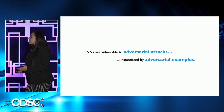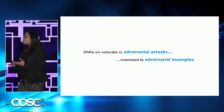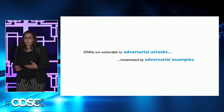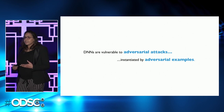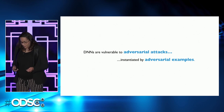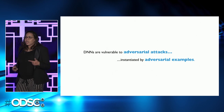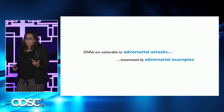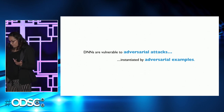It's a very dangerous problem and a real concern for the AI community today. In fact, recent research and studies demonstrated that deep neural networks are vulnerable to adversarial attacks in the real world. These attacks are instantiated by something called adversarial examples. So what is an adversarial example? How can these attacks be performed, and how can we defend against them and make our model more robust?